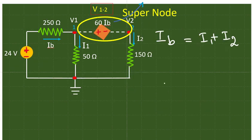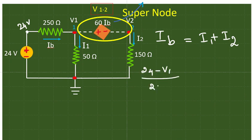For Ib, I can write: at this point 24 volts is available, so the current is flowing from this point to this point, from 24 volts to V1. So it is 24 minus V1 divided by the resistance 250 ohms. That is equal to i1. i1 is V1 minus 0 potential divided by this 50 ohms.